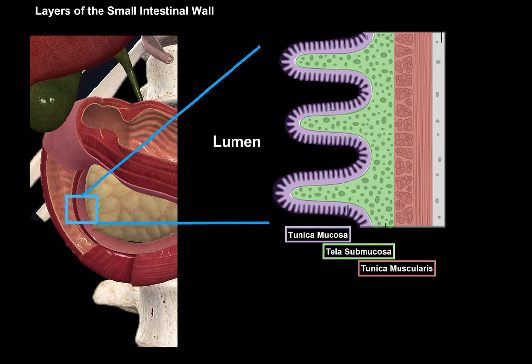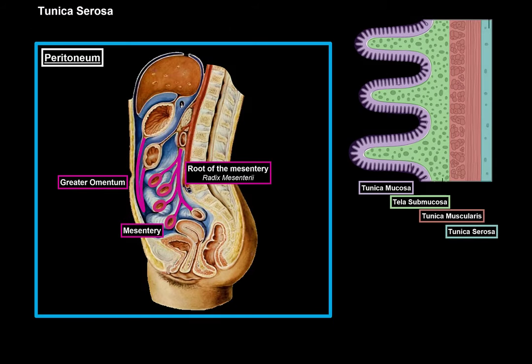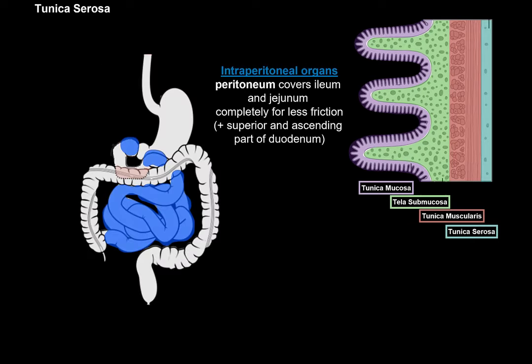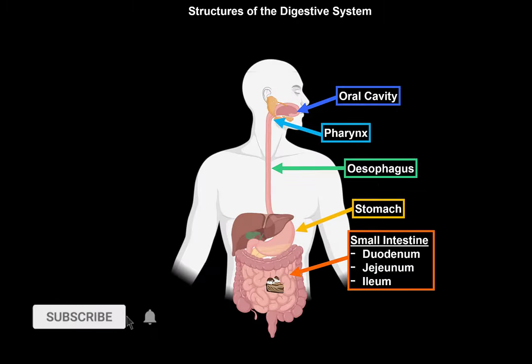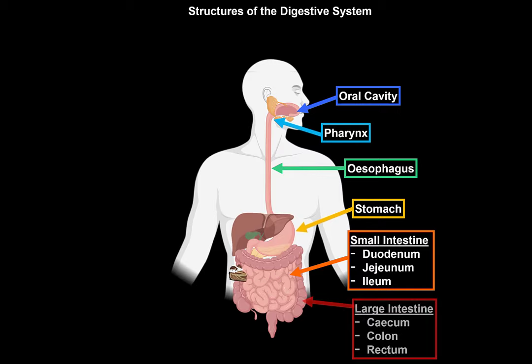The last layer of the small intestine is the tunica serosa. The peritoneum completely covers the intraperitoneal organs — mainly the ileum and jejunum, but also the superior and ascending parts of the duodenum. The rest of the small intestine consists of retroperitoneal organs, where the peritoneum only covers part of them. The areas of the duodenum not covered by the peritoneum have tunica adventitia instead of tunica serosa — a stronger connective tissue covering rather than the typical slippery fatty covering provided by the tunica serosa. That was everything for the small intestine; the next video will be about the large intestine.